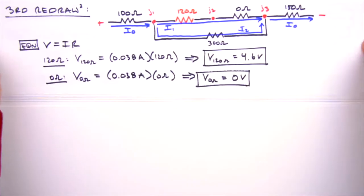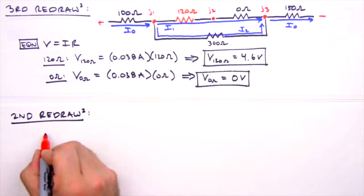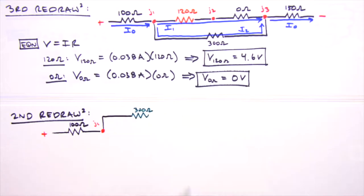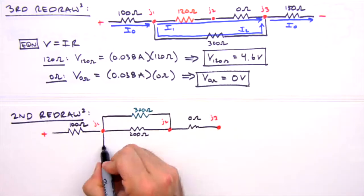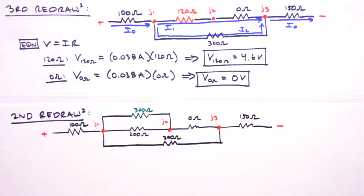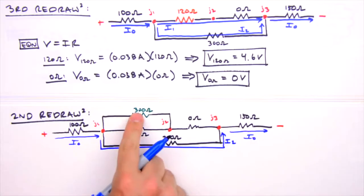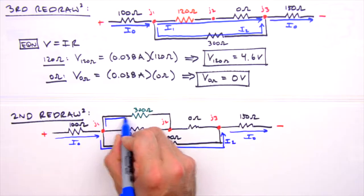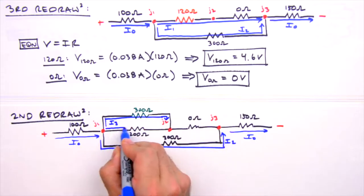Onward and upward, or backward, depending on how you look at this method. In our second redraw, we have an additional leg of this circuit, which means we need additional currents. Again, I0 and I2 don't change, but I1 is now divided between the 300 ohm and 200 ohm resistors here. So we'll call this one I3, and this one I4.